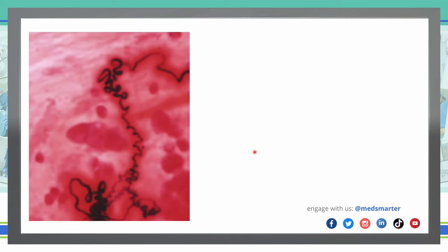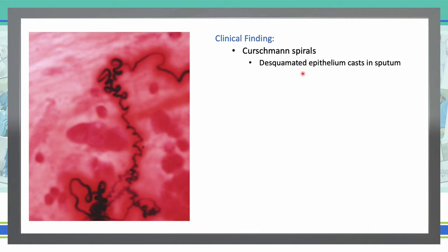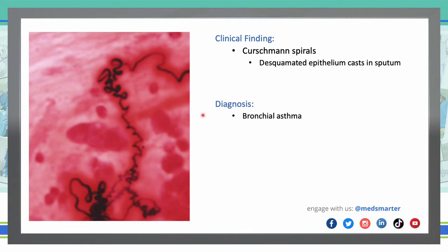Next, Curschmann's spirals. They are described as desquamated epithelial cast in sputum. It's a microscopic finding in the sputum of asthmatic patients — spiral-shaped mucus plugs from subepithelium mucus gland ducts of the bronchi. They may occur in several different lung diseases, and they may refer to parts of the desquamated epithelium. Where are we going to see Curschmann's spirals? In bronchial asthma.